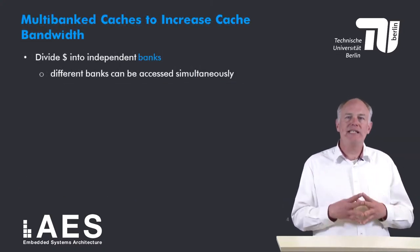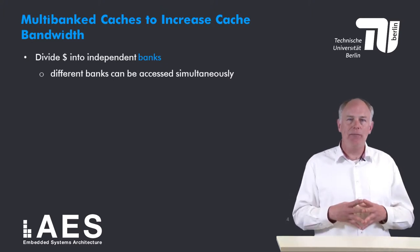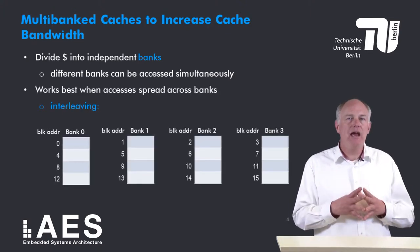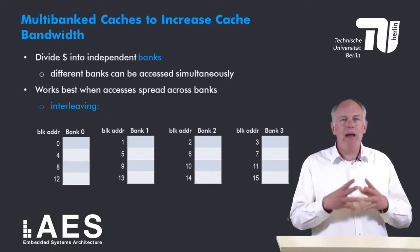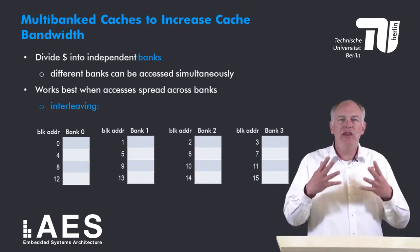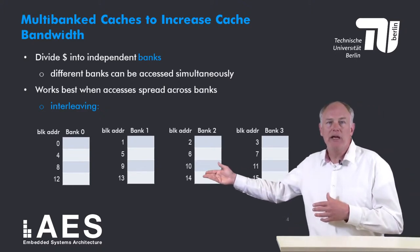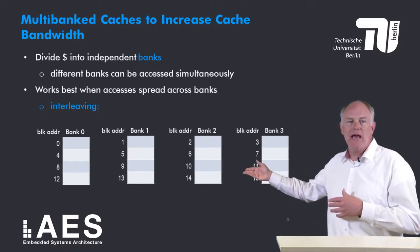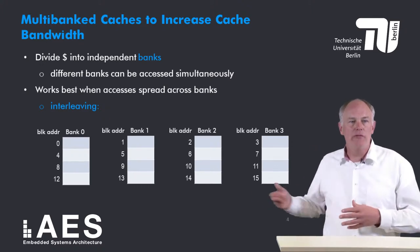The second technique to increase cache bandwidth is to employ a multi-banked cache. In this technique the cache is divided into several independent banks that can be accessed simultaneously. This technique works best when the accesses are spread across the banks. A simple mapping that works well is called sequential interleaving. In this mapping the first block is mapped onto the first bank, the second block onto the second bank, and so on until we reach the last bank, after which the next block is mapped to the first bank again.